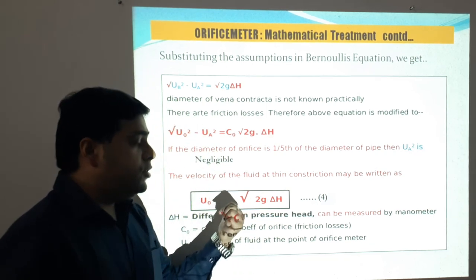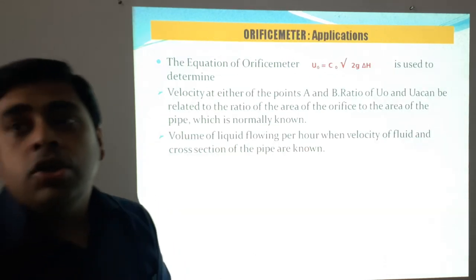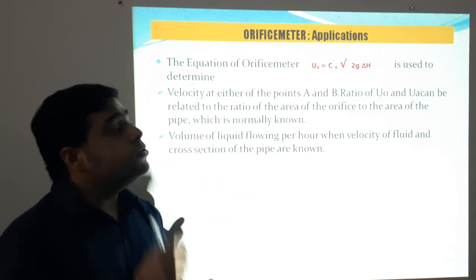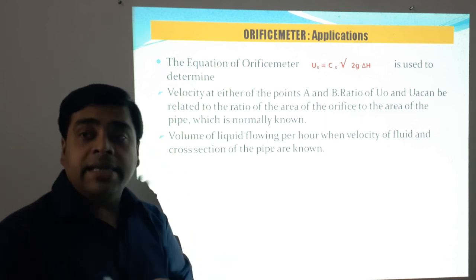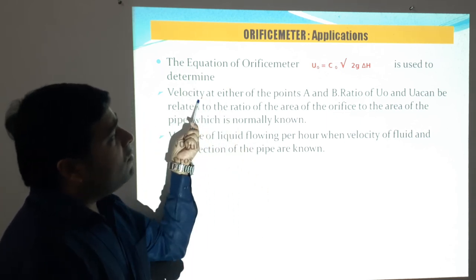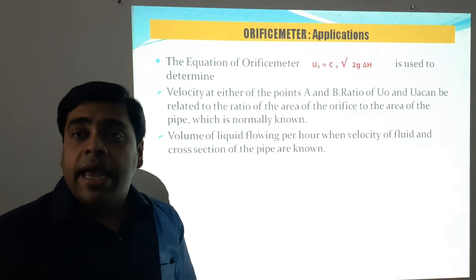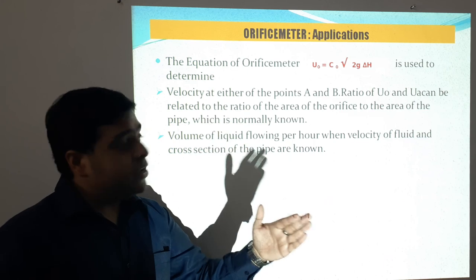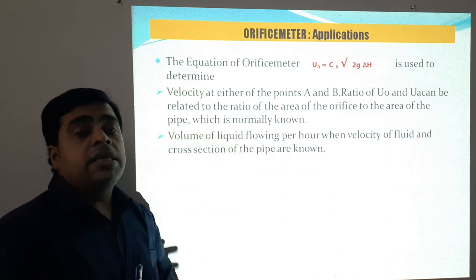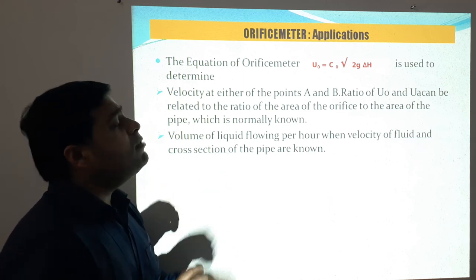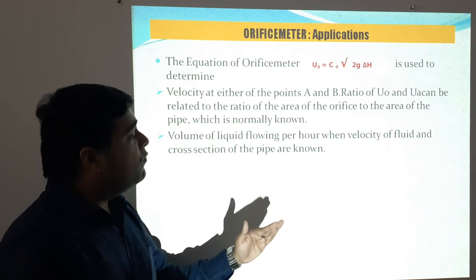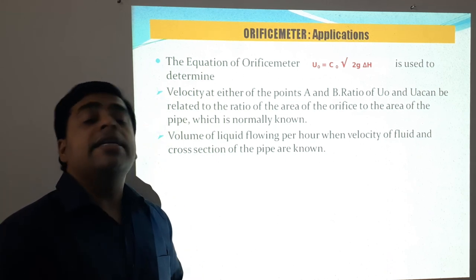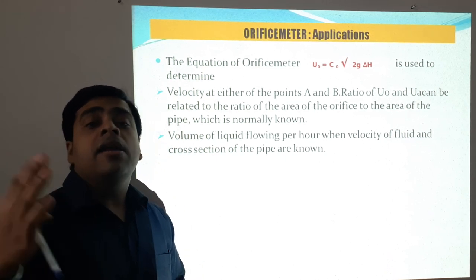U₀ is the velocity of the fluid at the point of the orifice meter where there is the vena contracta. The key equation is: U₀ = C₀ × √(2g·ΔH). This equation is used to determine velocity at either points A or B, and the ratio of U₀ to UA can be related to the ratio of the orifice area to the pipe area. Additionally, the volume of liquid flowing per hour can be determined when the velocity and cross-section of the pipe are known. In subsequent lectures, we will discuss other measurement parameters.